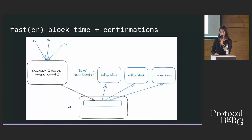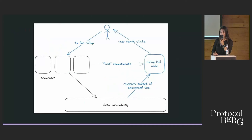Another thing is having faster block time and confirmations. Centralized sequencers already do this: the sequencer sends fast commitments which rollup nodes use to tell the user their transaction has been included in a rollup block without waiting for L1. We want that. So we want the sequencer to run fast and not be constrained, meaning a minimal state machine. Currently rollup sequencers do batching and ordering but also execution and posting the state root to L1. If you have a shared sequencer that's also executing, you'd have potentially many different rollup state machines embedded in it.